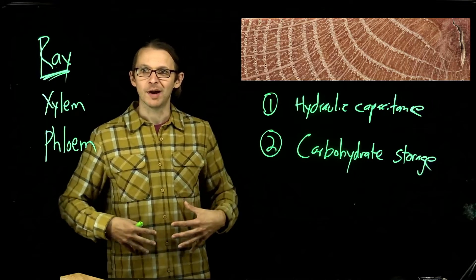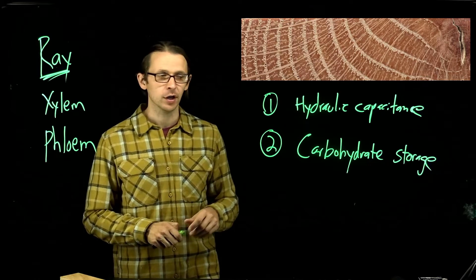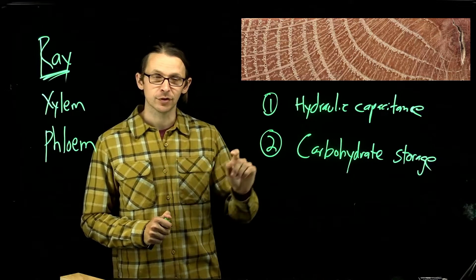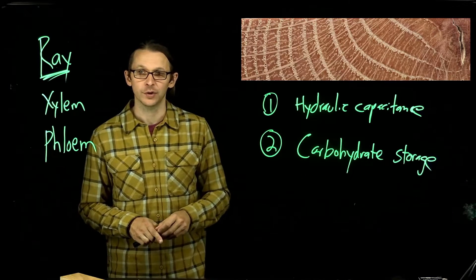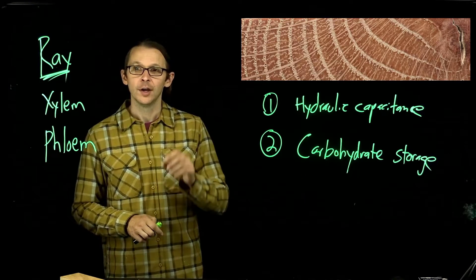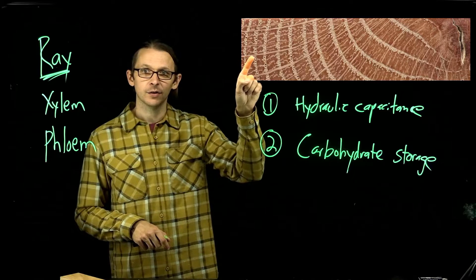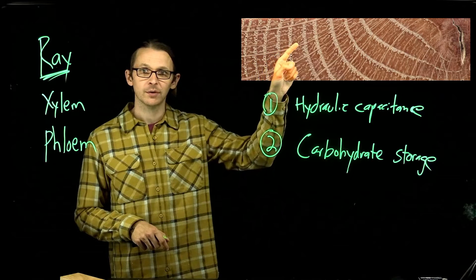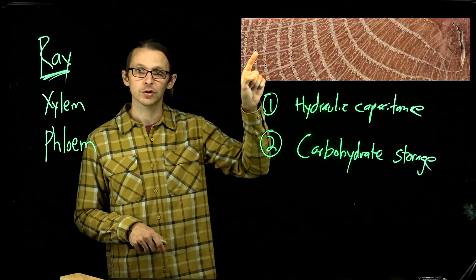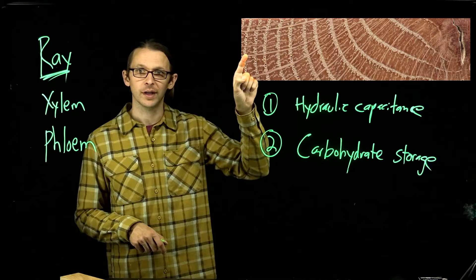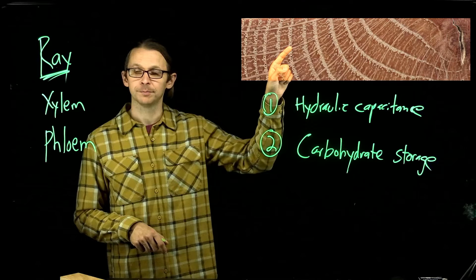You can think of my fat as my little pantry where my storage reserves are. Trees also have a pantry of storage reserves, and that's frequently carbohydrates stored in rays. Inside the rays — going through this ray right here — is very likely full of a whole bunch of starch granules that are available for later usage.